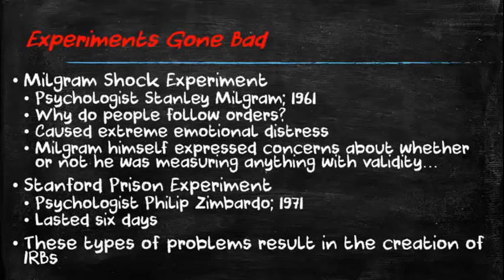The Milgram Shock Experiment and the Stanford Prison Experiment have been used in psychology and sociology classes for years. Both caused great emotional distress to the research participants, and both resulted in the creation and use of the Institutional Review Board over time. Institutional Review Boards have now become part of every college and university that does research with human subjects.